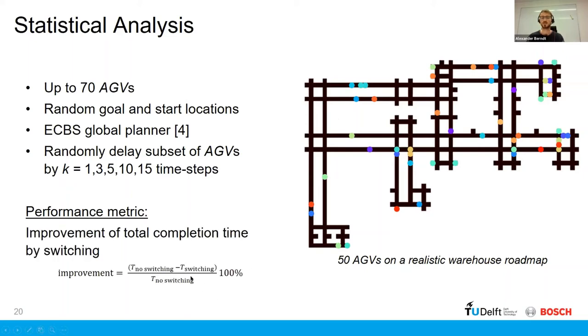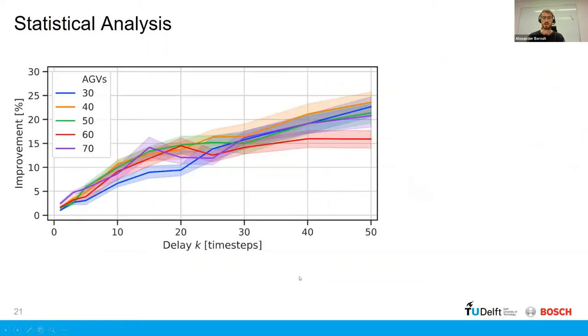And the performance metric would be, we would look at the cumulative route completion time of all the AGVs. And then we would look at what happens if we do switching versus if we do not. And the results look as follows. So as the delay increases, we see that we actually have an improvement, meaning that we have lower cumulative route completion times for different AGV group sizes.